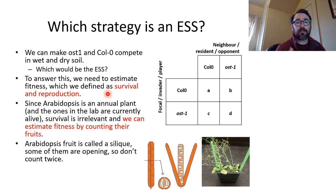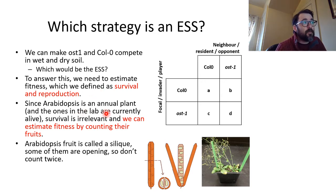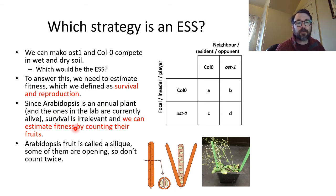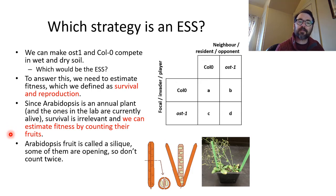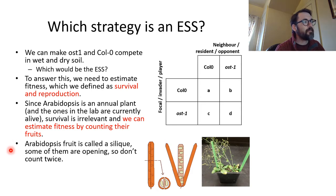To do this we need to estimate fitness, which we defined in lecture as survival and reproduction. Arabidopsis is an annual plant, and since the ones we use in lab are currently alive we can ignore survival and estimate fitness by simply counting the number of fruits they make. It's probably not a perfect estimate but we think fruit number correlates with offspring surviving to the next generation.